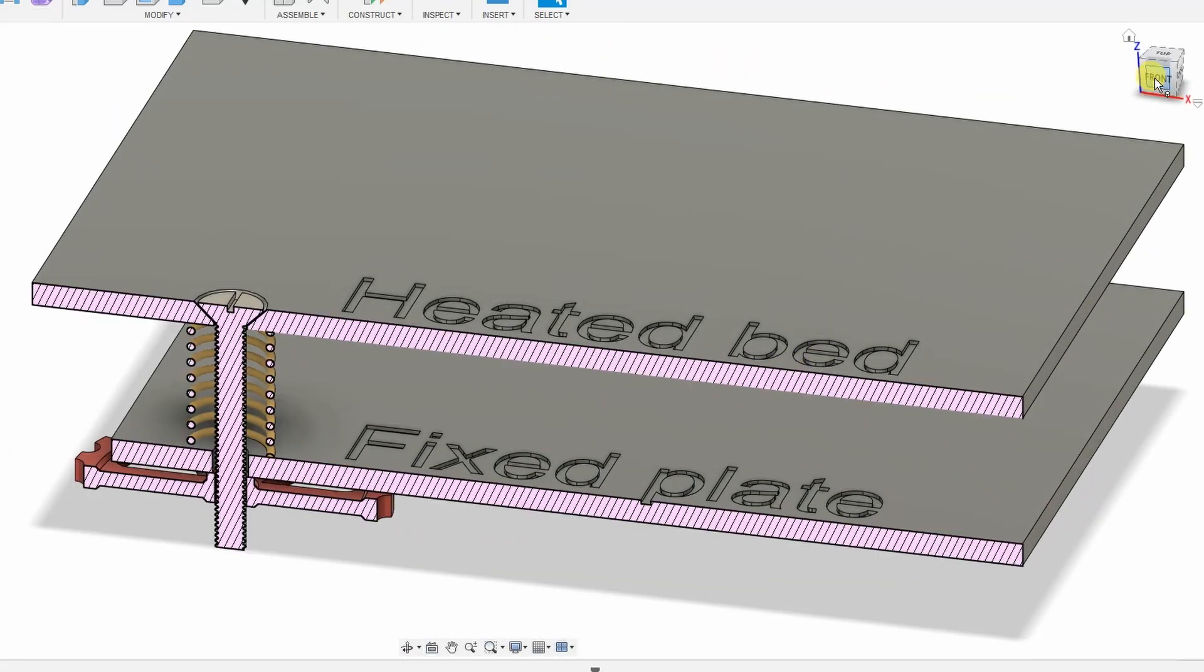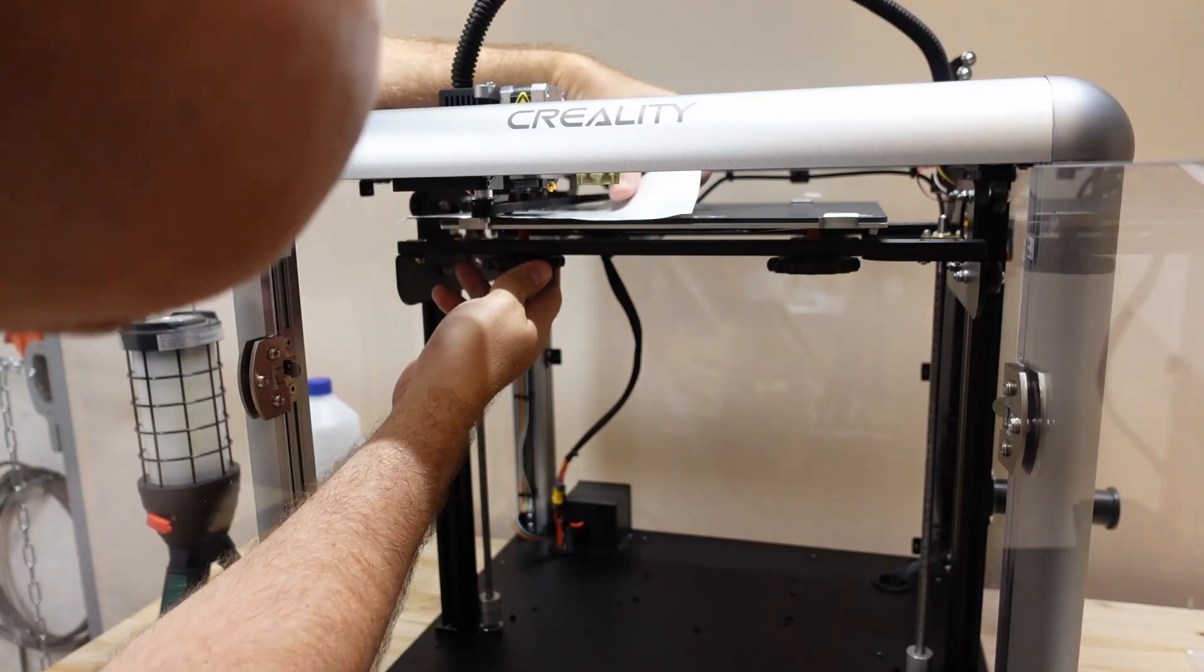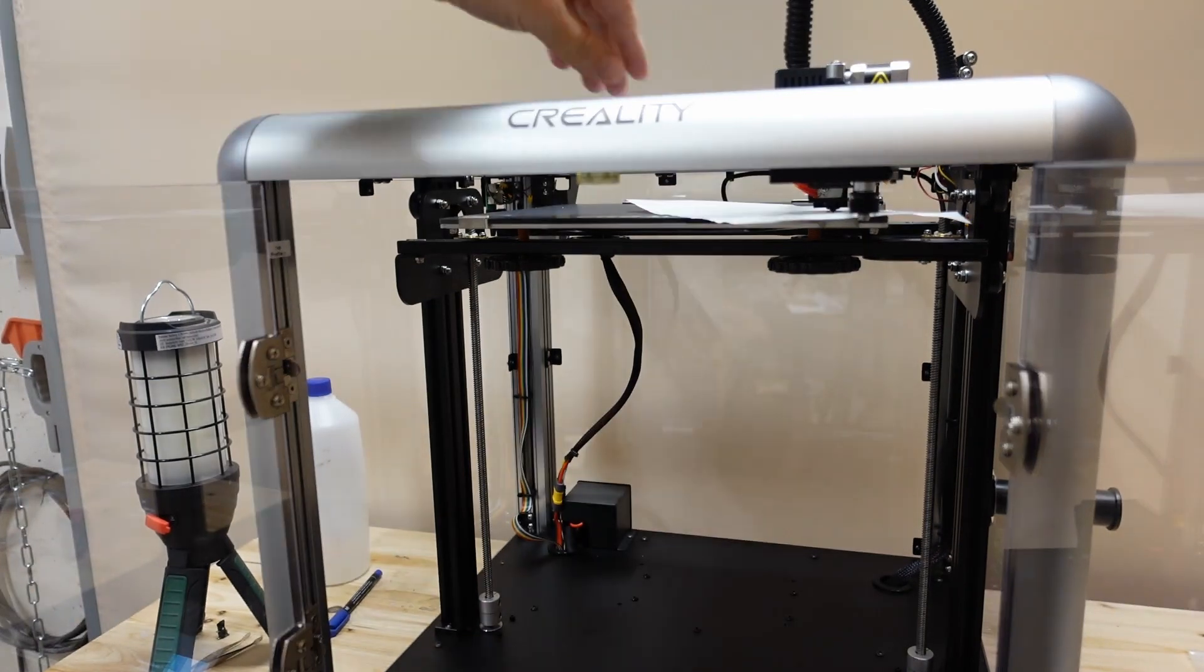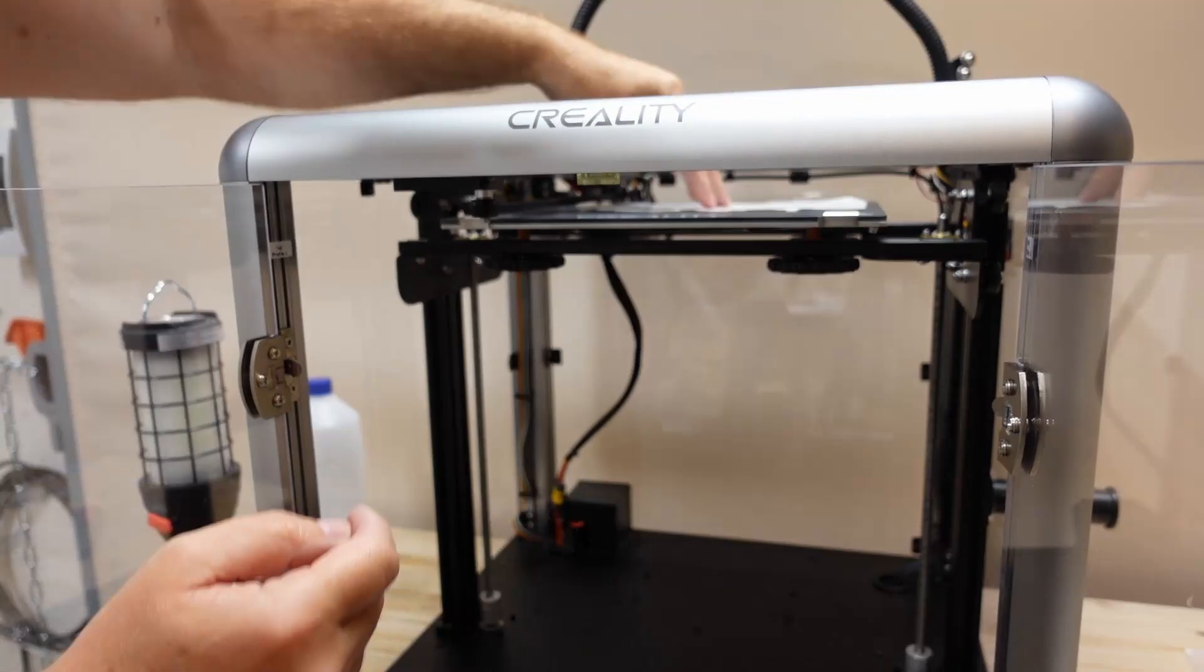Manual bed leveling is the method when you rotate the knobs to move the bed up and down, put some paper between the nozzle and the bed, and rotate the knobs until you get the perfect friction between paper and nozzle. You have to repeat this in all four corners.